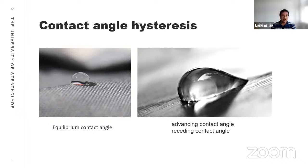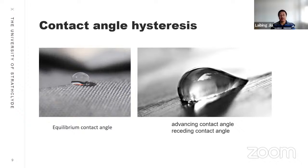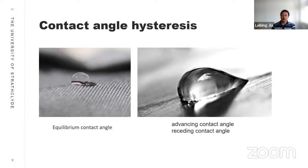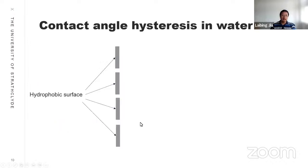Before giving the details of our study, I'd like to introduce background on contact angle hysteresis. When we discuss contact angle, for example, a droplet sitting on fabric forms a shape with an equivalent contact angle — this is the static condition. However, when we tilt the surface, the droplet slides, forming different contact angles: the advancing contact angle at the front and the receding contact angle at the tail. There is actually a range, not just a single value.